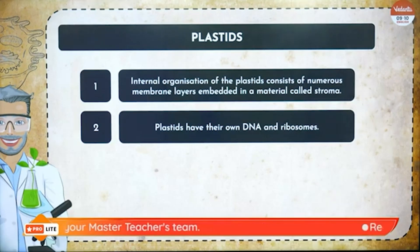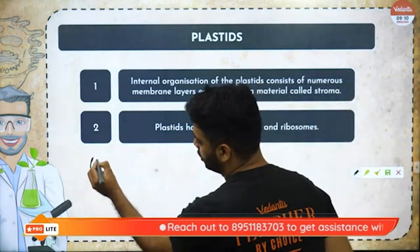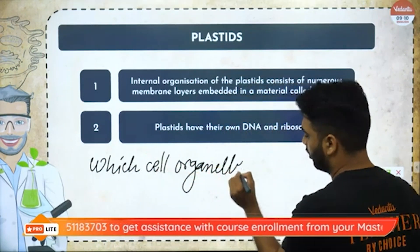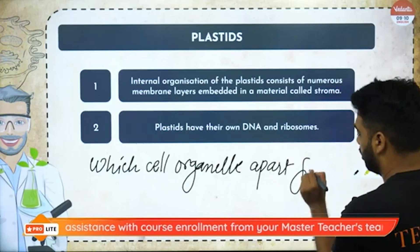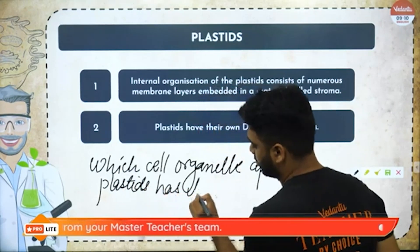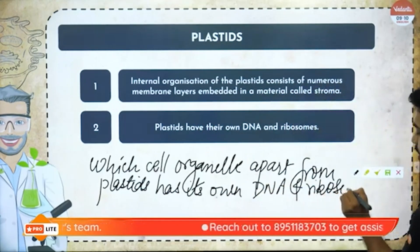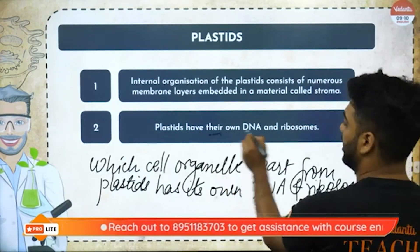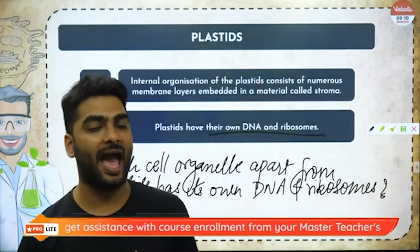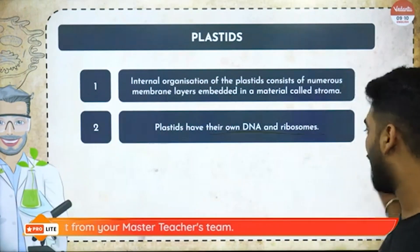The internal organization of the plastid consists of numerous membrane layers embedded in a material called stroma. Plastids also have their own DNA and ribosomes. Your homework question for today: which cell organelle, apart from plastids, has its own DNA and ribosomes? Tell me in the comment section below.